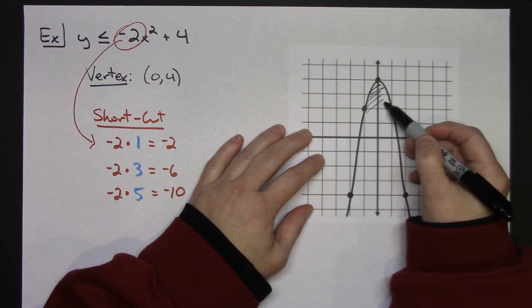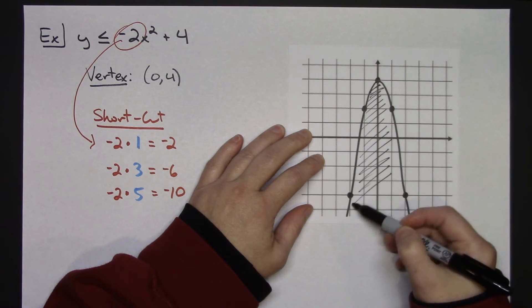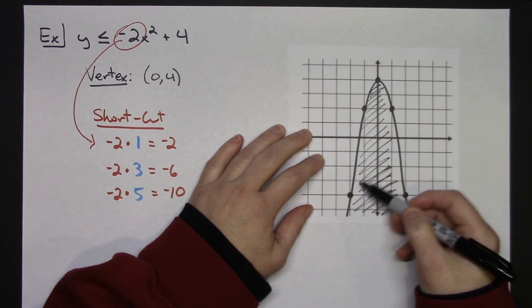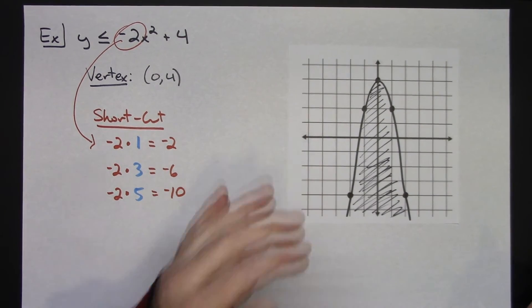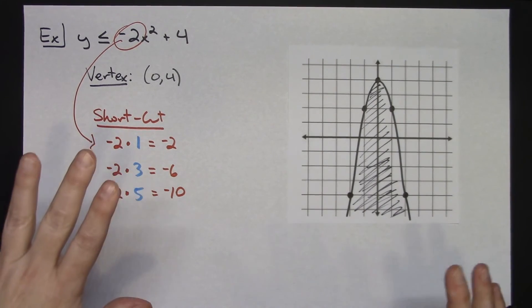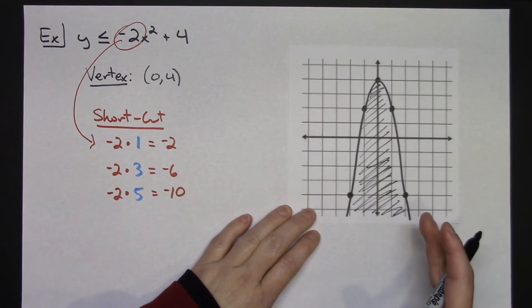Since it is a less than symbol, I want numbers that are less than the quadratic, which means I shade below the parabola. That's two examples using the shortcut method so you don't have to use the XY table, making a decision about shading and whether to use solid or dotted lines.